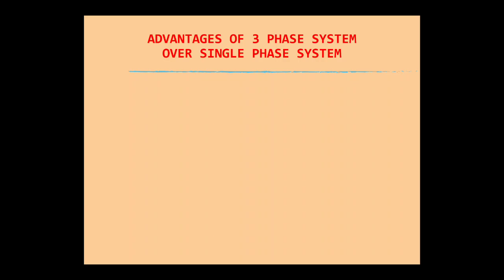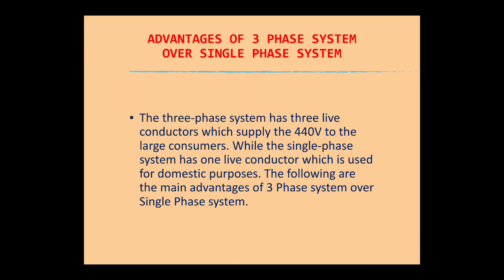First, let us discuss the advantages of a three-phase system over a single-phase system — why we choose three-phase instead of single-phase. The three-phase system has three live conductors supplying 440 volts, which is the standard voltage (may be 415 volts) to large industrial consumers, while the single-phase system has one live conductor and a neutral, used for domestic purposes.